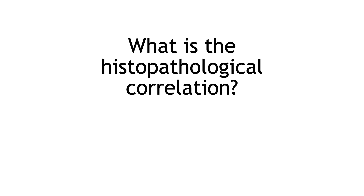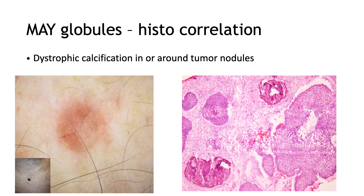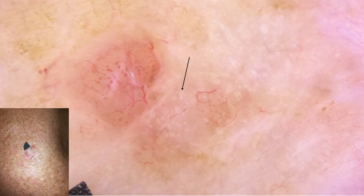So what is the histopathological correlation of MAYG globules? MAYG globules are correlated with dystrophic calcification in and around tumor nodules. In this patient you can see a pink papule on the abdomen; on dermoscopy you see a pink background, arborizing vessels, and MAYG globules. A biopsy showed nodular basal cell carcinoma and calcification in the stroma.